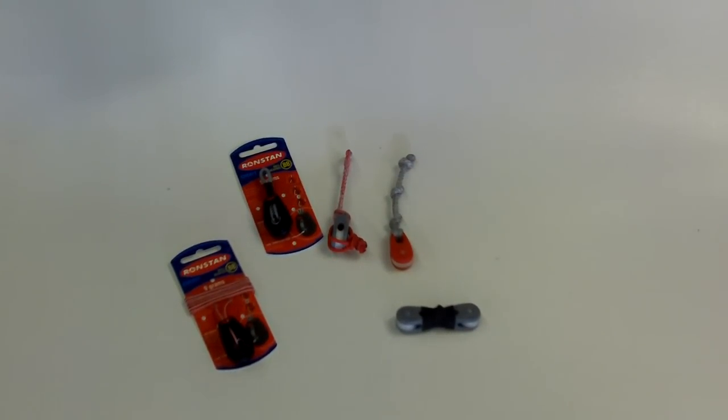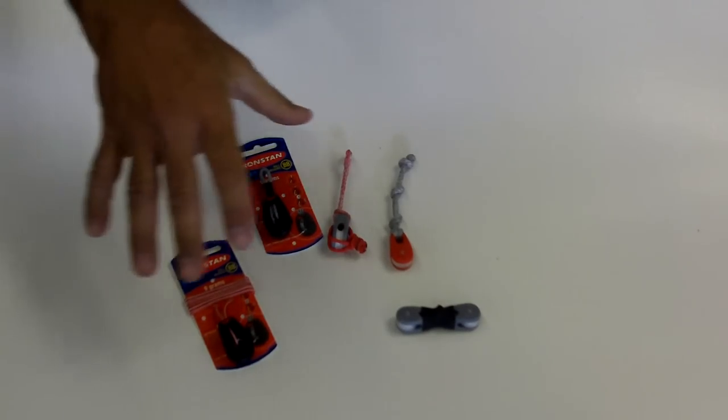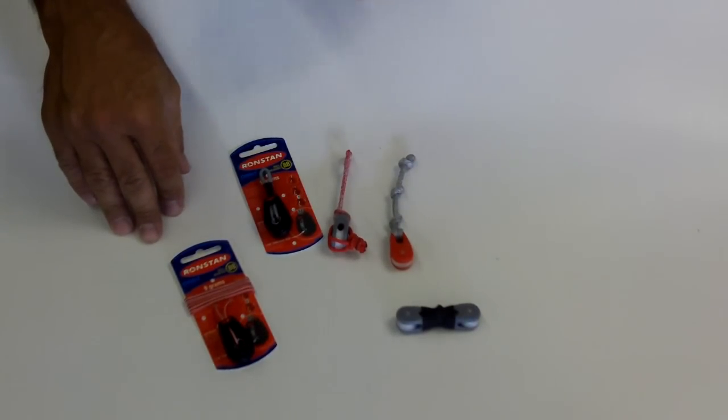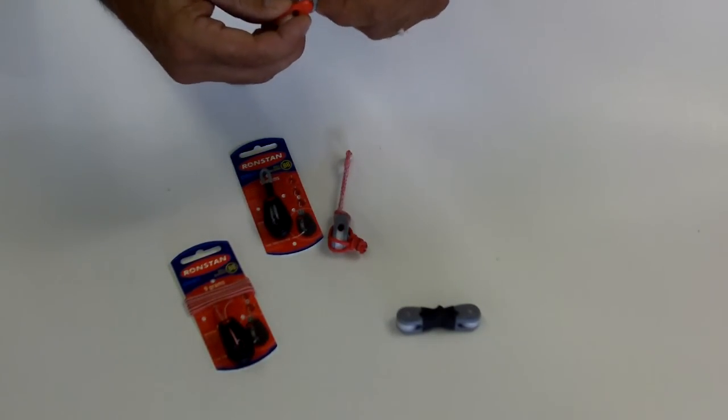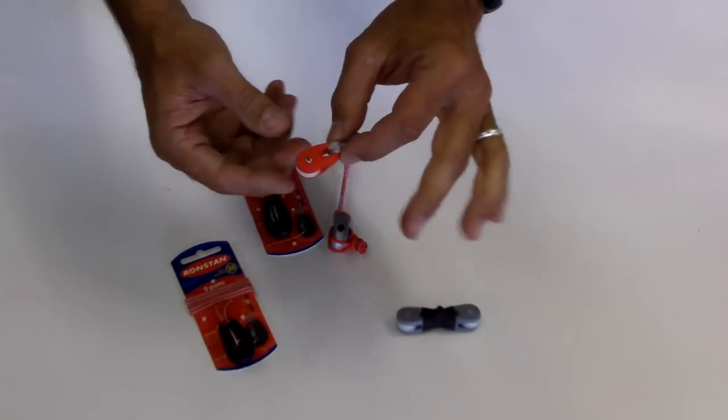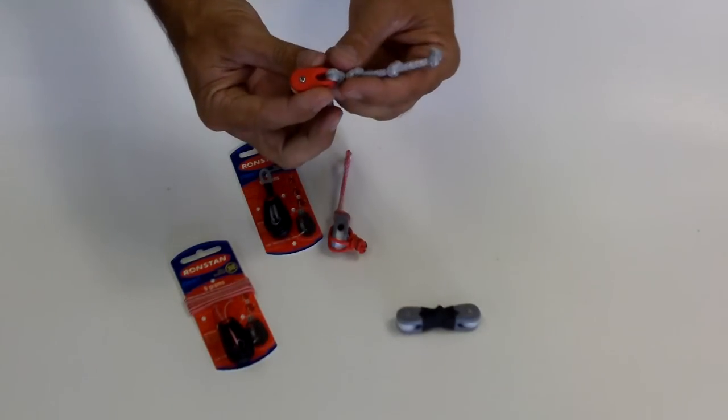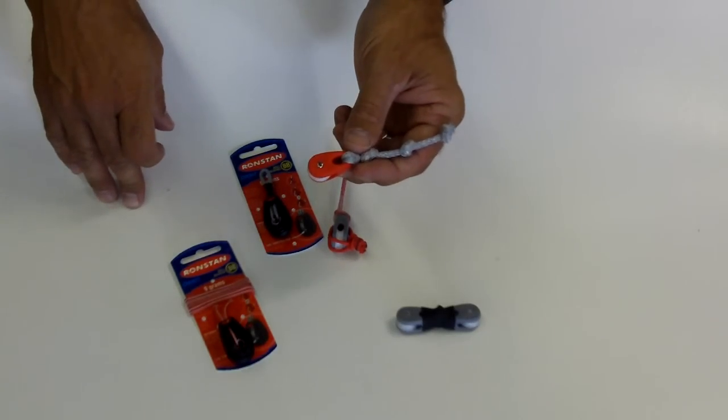Here at FixMyKite.com and Kiteboarding.com, I want to describe the difference of some new pulleys that we've got. A lot of the new kites that are coming out or have been on the market for many years use the standard Ronstan Kite Block Pulley. This one is rated at about 650 to 700 pounds.